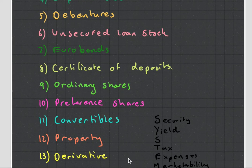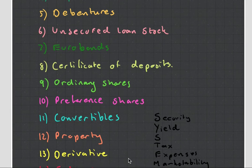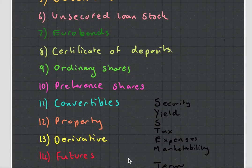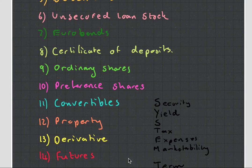Then there are derivatives — these are financial instruments that derive their value from another asset, and they're used to speculate or to hedge. One of them is a future. A future is when you say you're going to need 100 cows in the future, and you agree on the price today. If the price goes up, you win because your price is lower, but if the price goes down, you lose because you have to pay the higher agreed amount. There are videos and resources that explain futures in more depth.